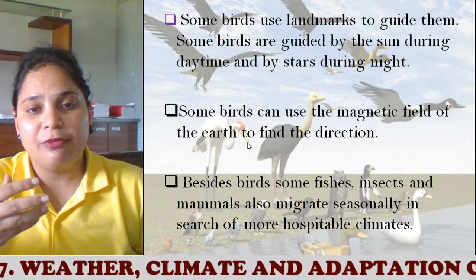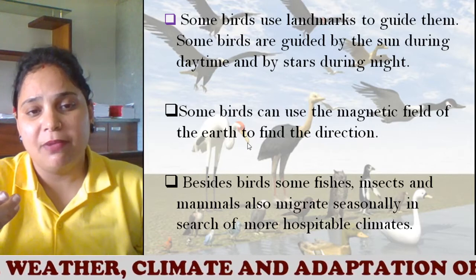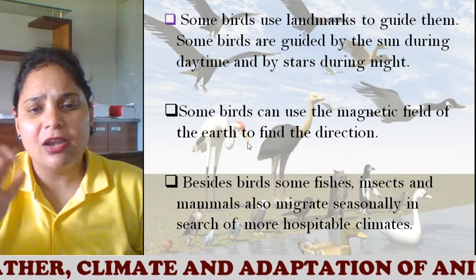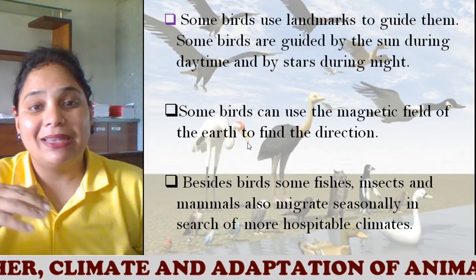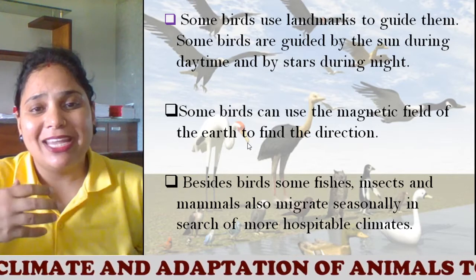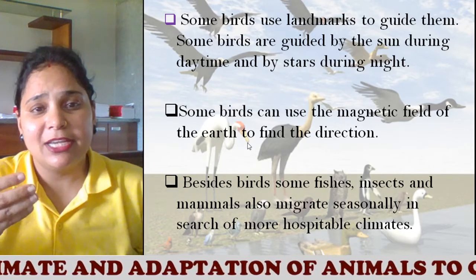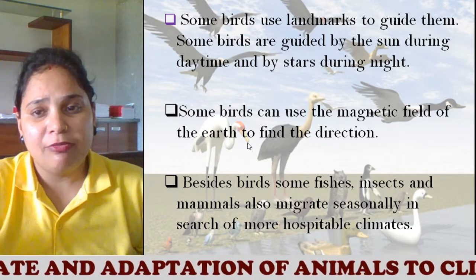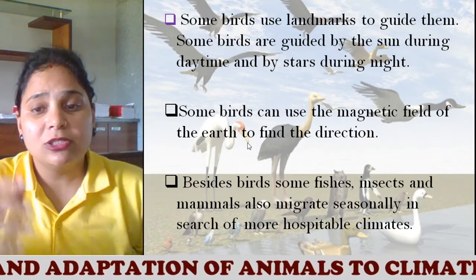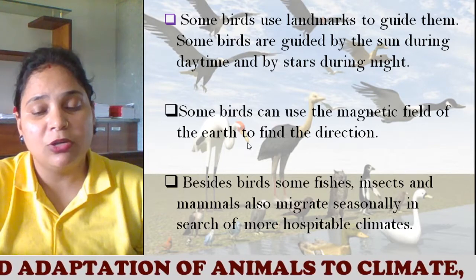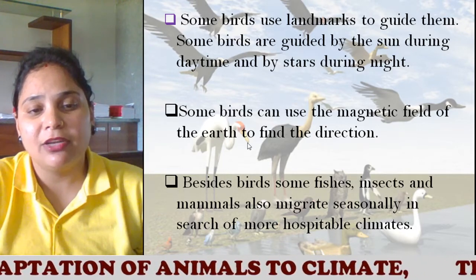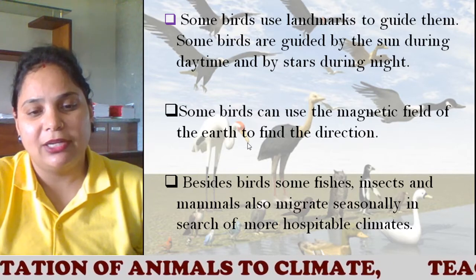When we talk about humans as a supreme power, even these birds — which are not so powerful compared to humans — are gifted with such abilities. They can sense the wind, the Sun's direction, navigate by stars, and even sense the magnetic field of the earth to find direction, without any radar or compass.